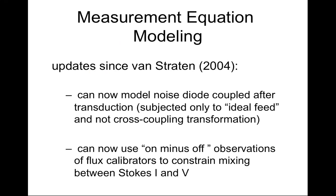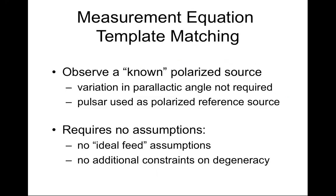The PCM code has been updated this year so it can use both on-source and off-source observations of a flux calibrator like Hydra A, subtracting them to give a better estimate of a source with zero or very little Stokes V. Another update: the first PCM model assumed the noise diode signal was transmitted into the feed horn and therefore went through the same cross coupling as the pulsar signal. The code has been updated to also model systems where the noise diode signal is coupled after transduction — only subjected to the ideal feed transformation, not the cross coupling.